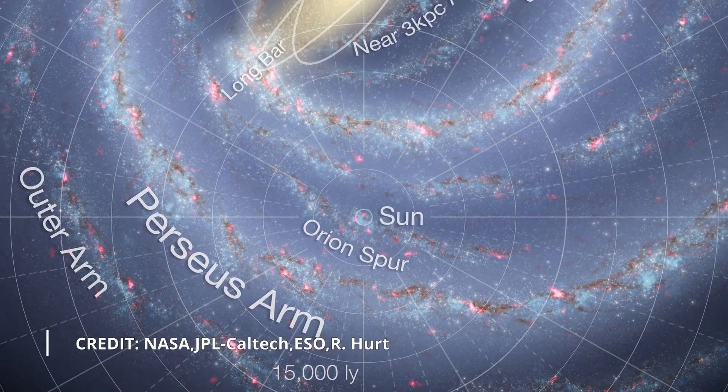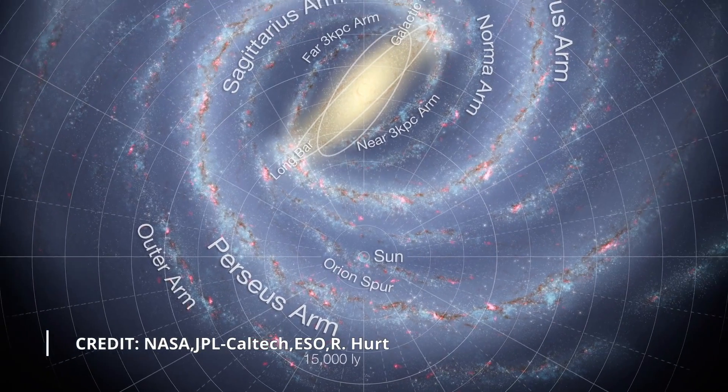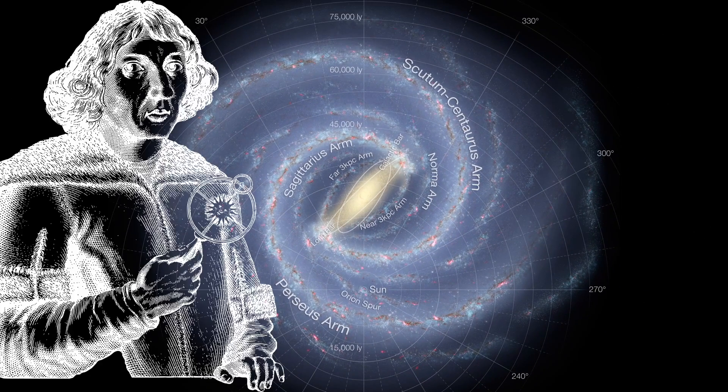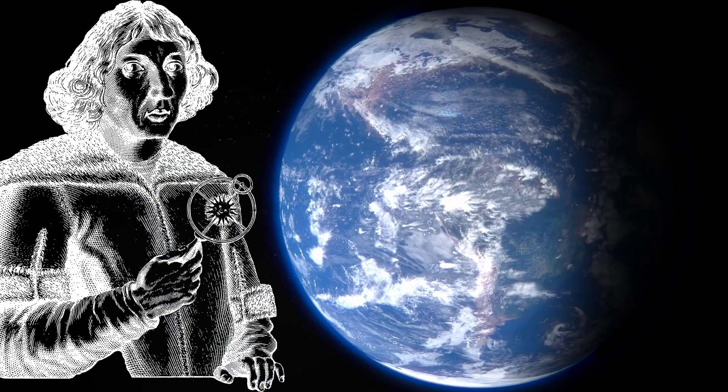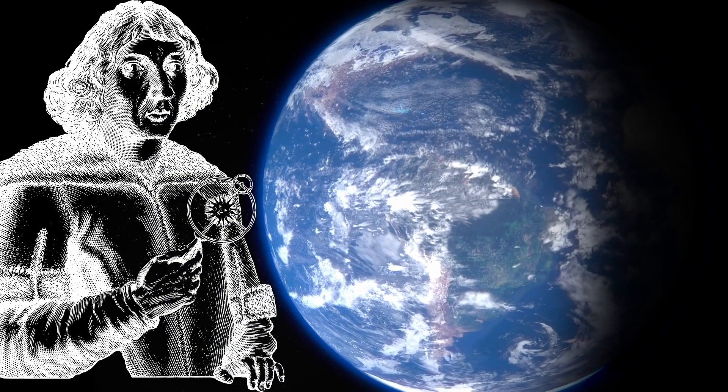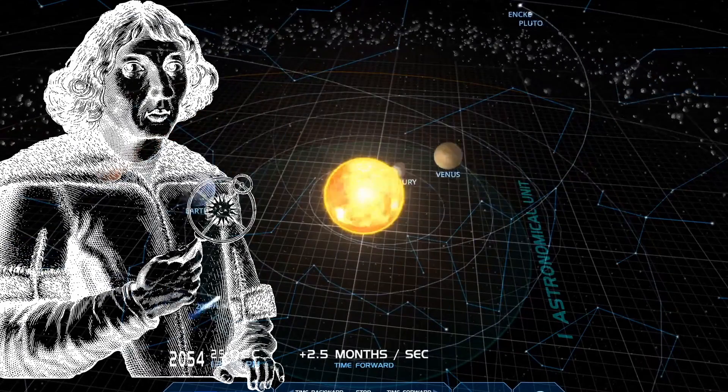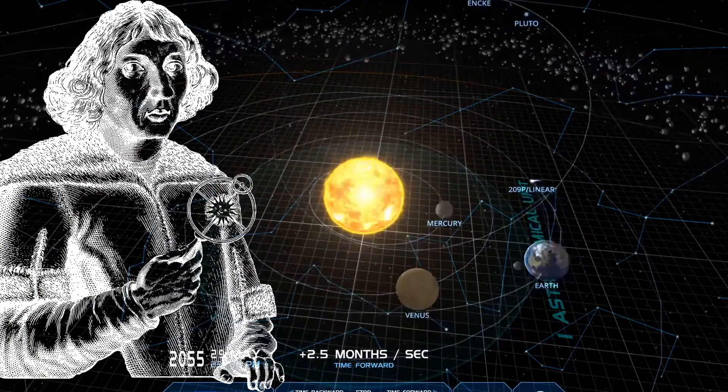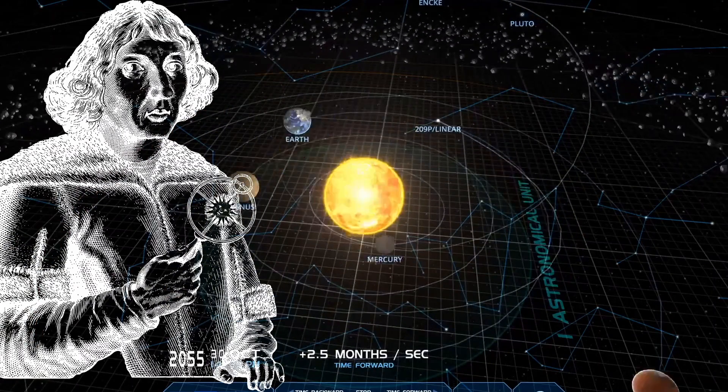Science portrays that our corner of the universe is nothing special. At the heart of this assumption lies the Copernican principle, which states that humans on Earth are not privileged observers of the universe. Not only is our solar system highly unusual, but our sun is not a run-of-the-mill star.